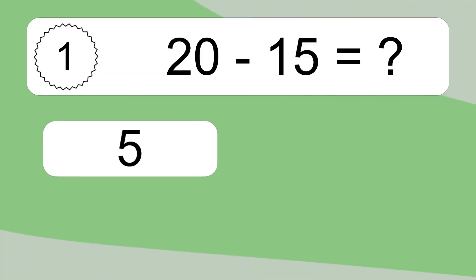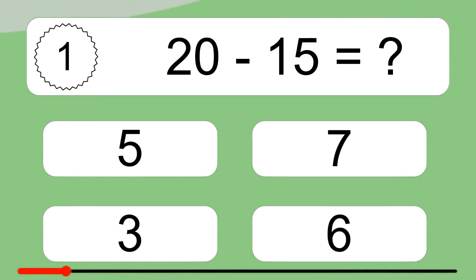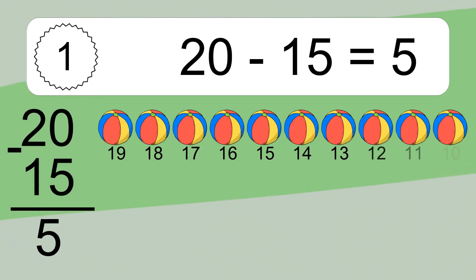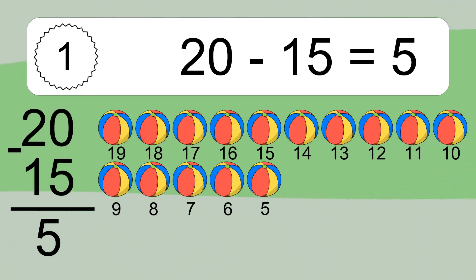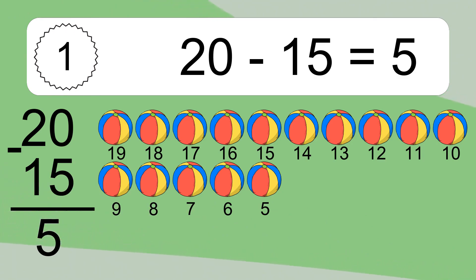20 minus 15 equals what? 20 minus 15 equals 5. Let's count it: 19, 18, 17, 16, 15, 14, 13, 12, 11, 10, 9, 8, 7, 6, 5.